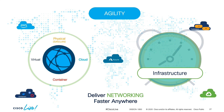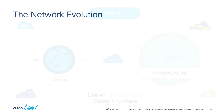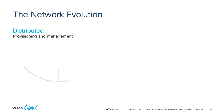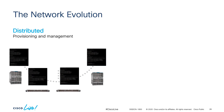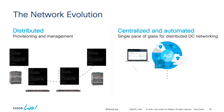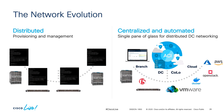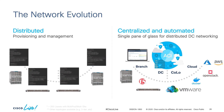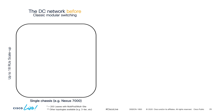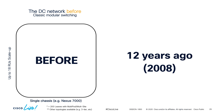This is where we evolved the model as well — changing from a distributed model where we would configure the data center physical network through the CLI on a per-port, per-switch, and even per-location basis, to a centralized and automated model providing one management point, automation, and consistent configuration for physical, virtual, container, and cloud networking in any location using Cisco ACI.